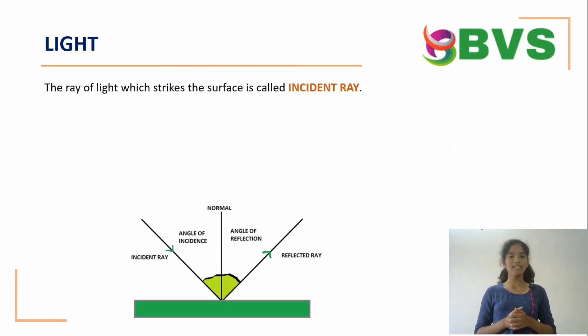The ray of light which strikes the surface is called incident ray. The ray which comes back after reflection is called reflected ray.